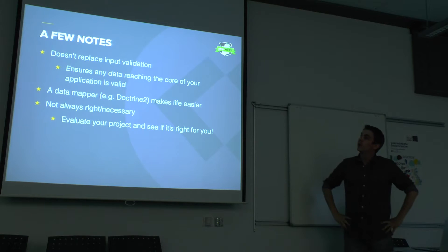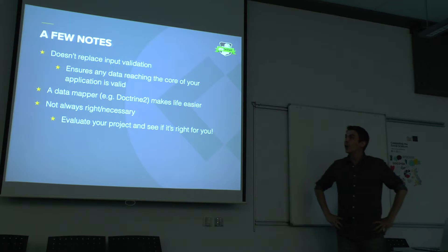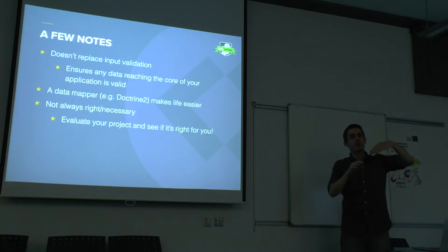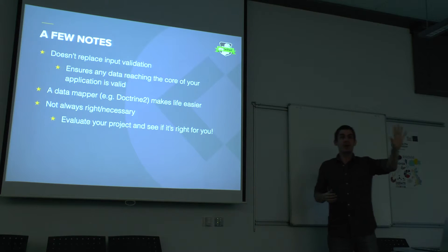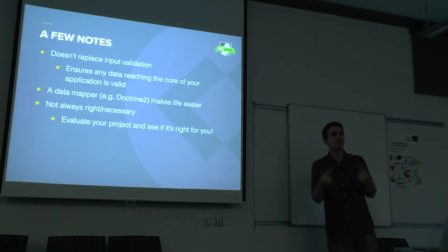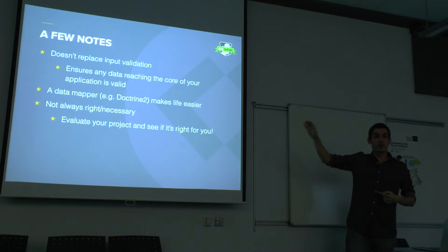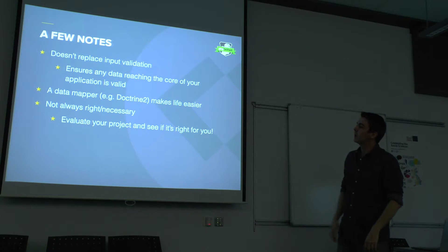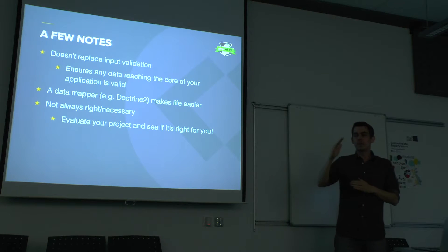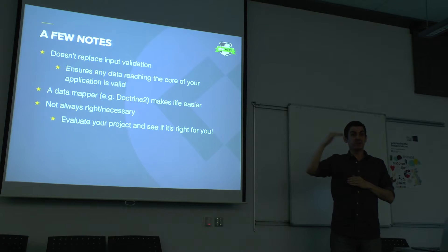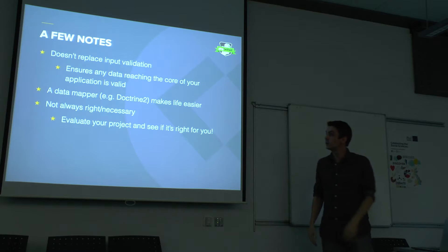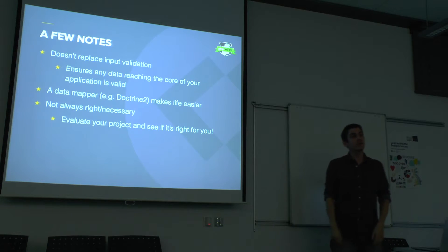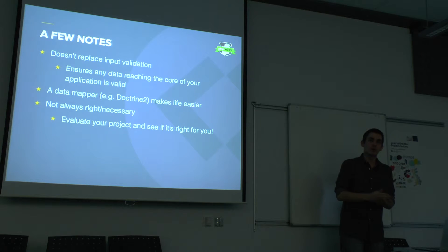Just a few quick notes: value objects don't replace your input validation on the front-end — they're deeper than that. Value objects ensure that once people get past the front-end, the core of your application isn't accepting invalid values. For example, you might have a form on your website that validates the email address, but somebody forgot to put the validation on the mobile app using the same API. Your business rules are enforced here regardless. You'll also need to use a data mapper like Doctrine 2 to make your life easy — when you pass your value object to a property of your class and persist it, Doctrine maps those values to columns in your database. It's not always right to use value objects; look at them on a case-by-case basis. Generally it's for larger projects where you absolutely need to enforce lots of complex business rules.